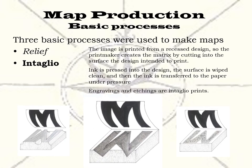The second type of map are those made by an intaglio process. In an intaglio print, the image is printed from a recessed design in the matrix, so that the printmaker creates a matrix by cutting into it the design he wishes to imprint in the paper. The ink is pressed into the design cut in the matrix, the surface is wiped, and the ink is then transferred to the paper under pressure. Examples of intaglio prints include engravings, etchings, aquatints, and mezzotints.